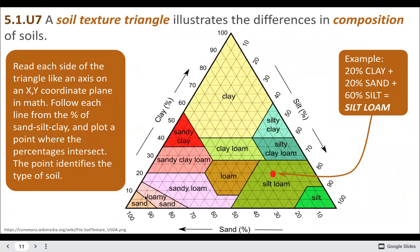You should know how to use soil texture triangles. The ones that show the angle with numbers make it easy to follow which way to go along each line. For example, with 50% sand and 30% silt, you follow both lines to where they intersect — that would still be a loamy soil.